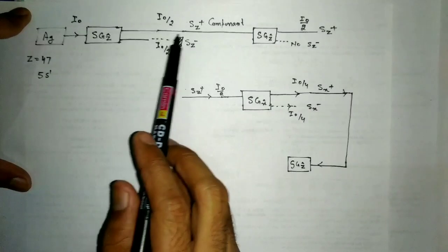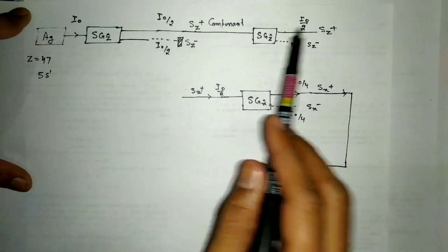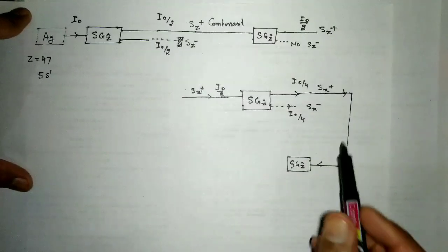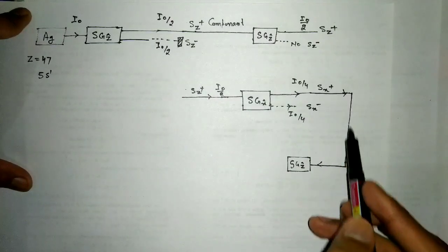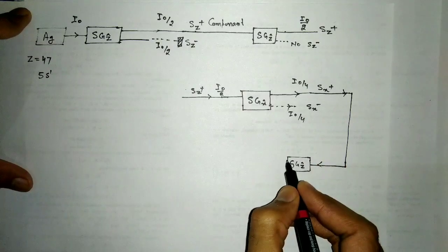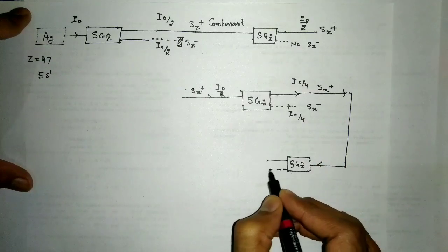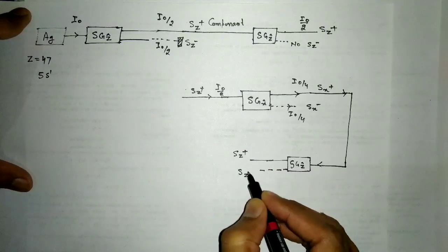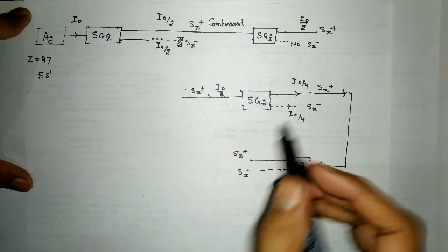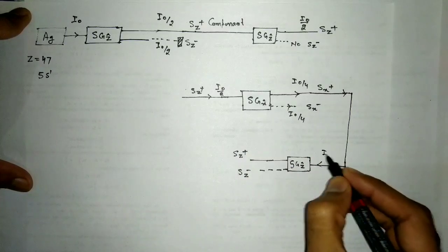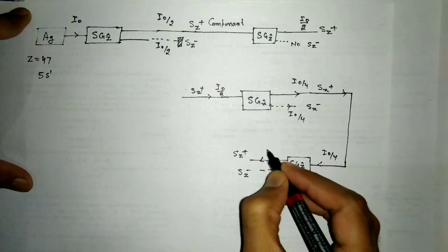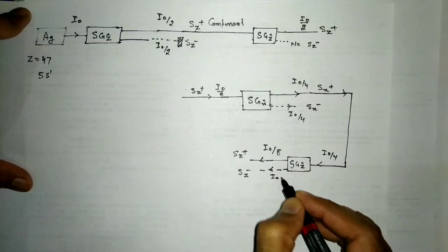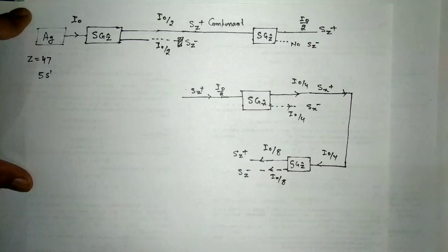Note that when the Sz+ component is passed through a second SG-Z arrangement, only Sz+ is available and no Sz− appears. However, if the Sx component is passed through an SG-Z arrangement, then again two components arise — Sz+ and Sz−. With input intensity I₀/4, the final intensity of each component is I₀/8.